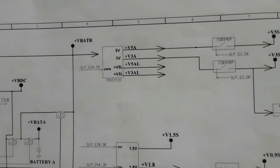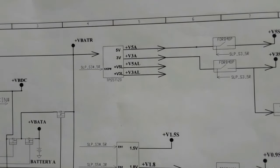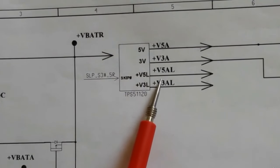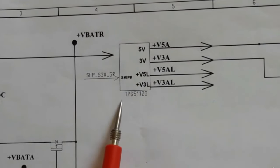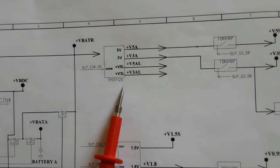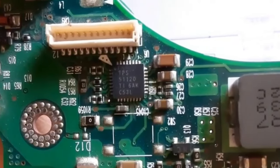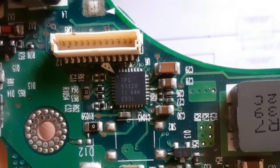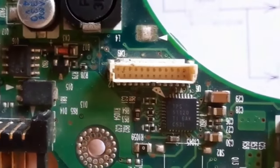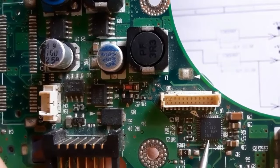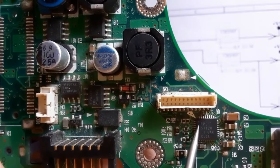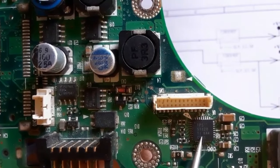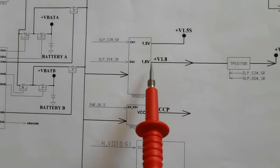Next we'll see the TPS51120 — the IC responsible for generating 3-volt always and 5-volt always.